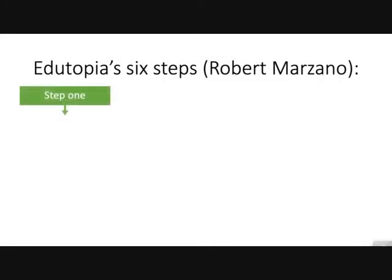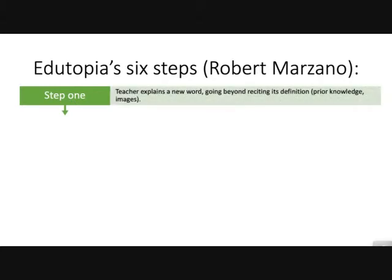If you read the Edutopia article, there are six steps and they base this on the approach done by Robert Marzano. In step one, the teacher explains a new word — introducing it but going beyond the definition by really activating students' prior knowledge and using images and scaffolding, asking questions rather than telling.